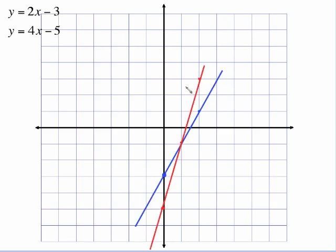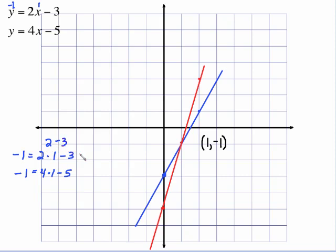You see on this screen the two lines drawn. There's the point of intersection. To the right 1, down 1 — that means the point of intersection is 1, negative 1. Let's check it out by putting 1 in for x and negative 1 in for y in both equations. So 2 times 1 is 2, minus 3 is negative 1 — it works. Put 1 in for x and negative 1 in for y: 4 times 1 is 4, minus 5 is negative 1 — it works. So 1, negative 1 is the point of intersection and it is also the solution to this system of equations.